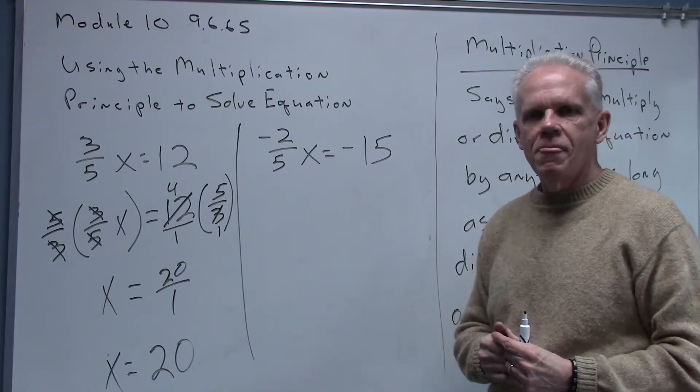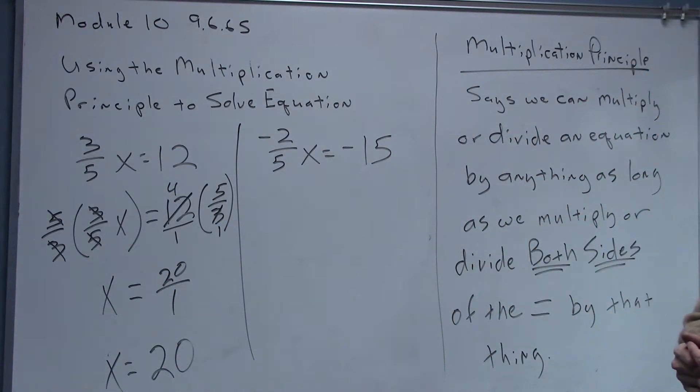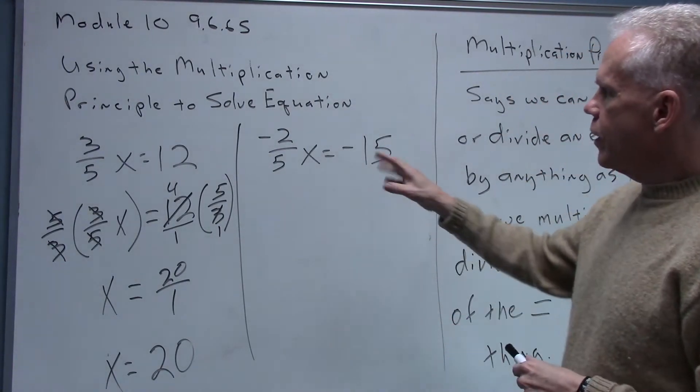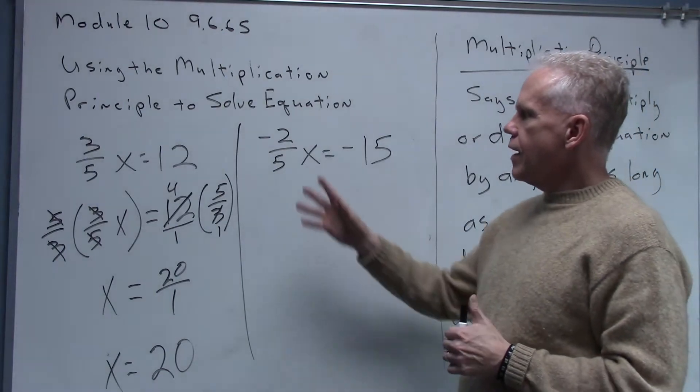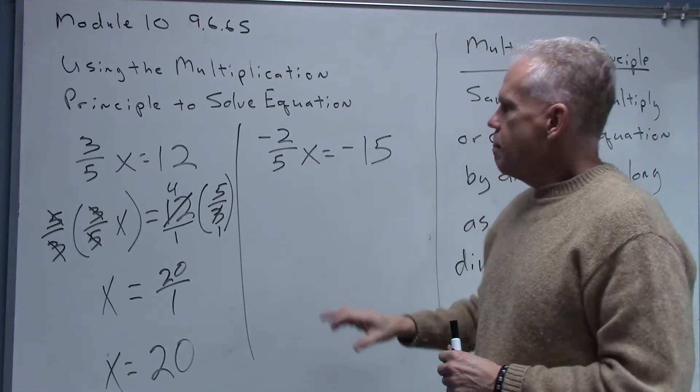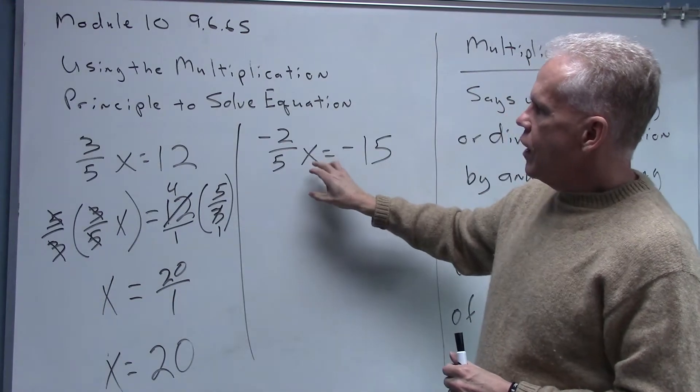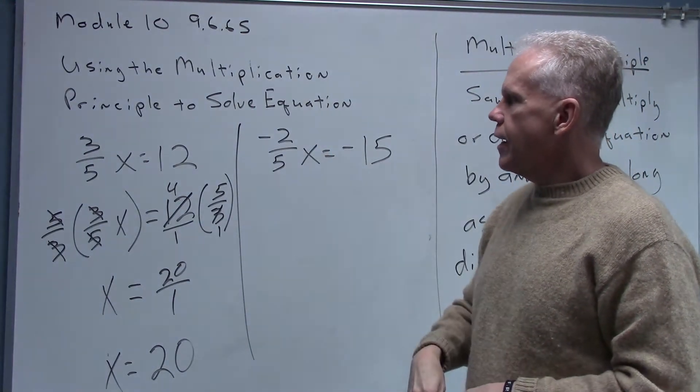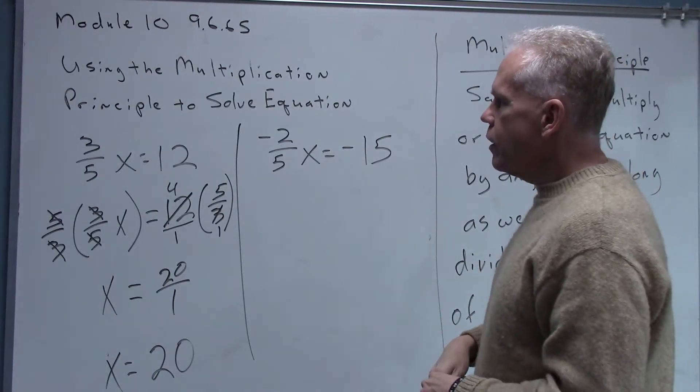Hey, welcome back everybody. Let's take a look at this quick equation here ourselves. We've got negative two-fifths x equals negative fifteen. The negative two-fifths you should have known is a coefficient on the x. We'd like to get rid of the negative two-fifths.